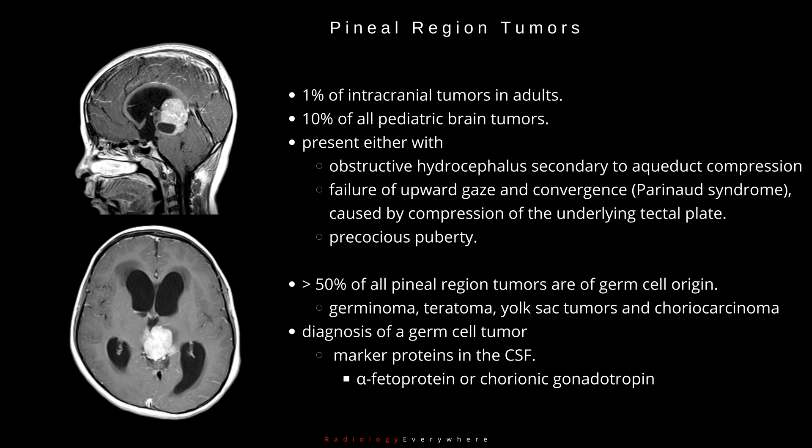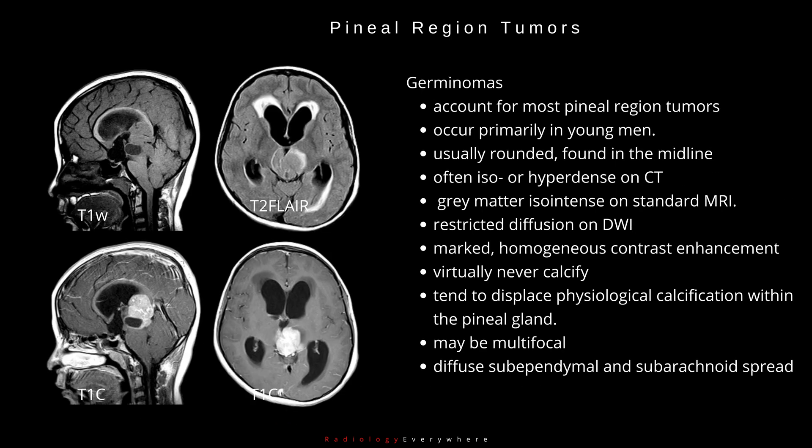Diagnosis of a germ cell tumour relies on the presence of marker proteins, such as alpha-fetoprotein or chorionic gonadotropin, in the CSF.